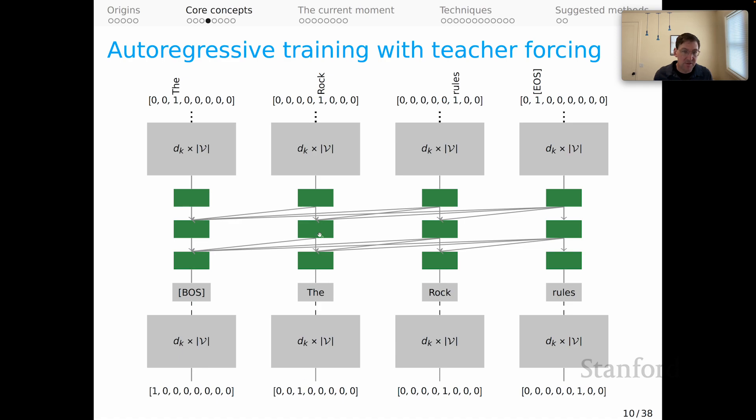Rock comes in down here, predicts rules, rules down here, and then we finally predict the end of token sequence. So we're offset by one using the previous context to predict the next token. And again, I've given these as one hot vectors because those one hot vectors are the actual learning signal.